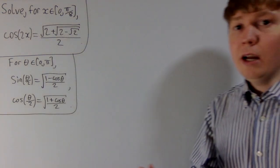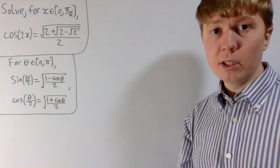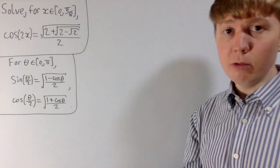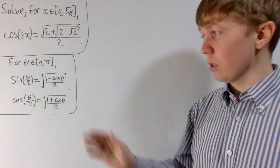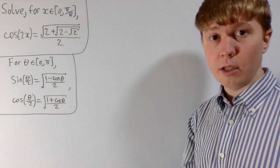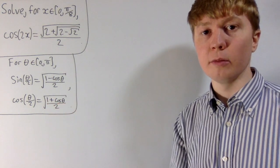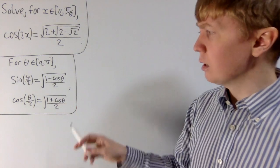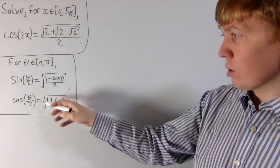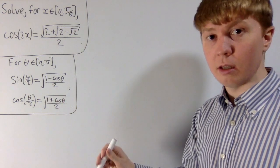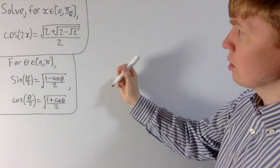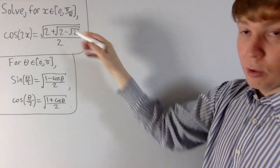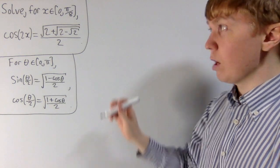Our equation now looks slightly nicer — there's one less square root in there, but there's still some work to be done. Looking at this structure again, we may wish to use the half-angle formula for cosine. This is another nice consequence of the double-angle formula for cosine. Cos of theta over 2 is the square root of 1 plus cos theta, all divided by 2, all inside the square root. We can try to use this to remove one more nesting of the square root.